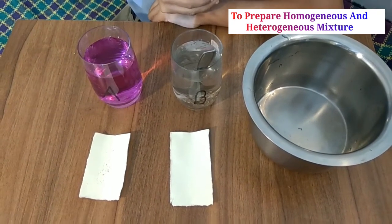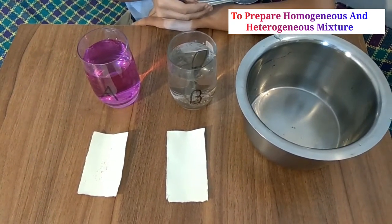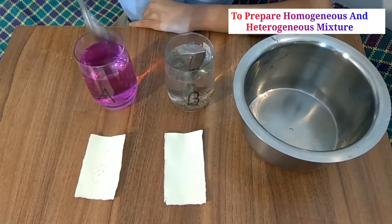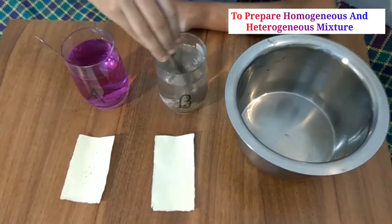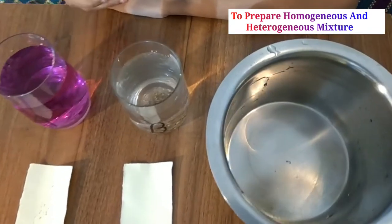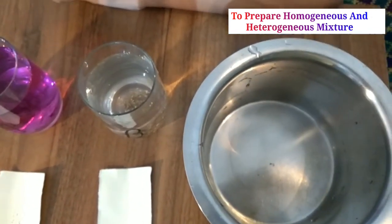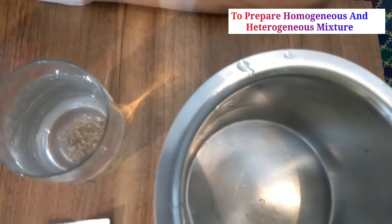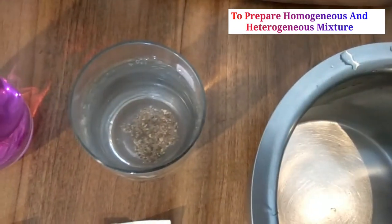Observe in glass B: when we stir, the sand moves for a while, but after some time the sand settles to the bottom and doesn't dissolve. That means the mixture of water and sand is a heterogeneous mixture.